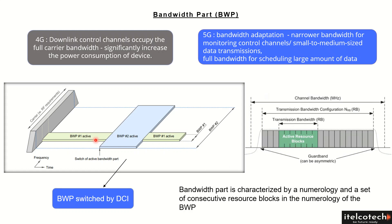The bandwidth part can be switched from one part to another, which becomes active from time to time. That switching will be done by the DCI, which is the Downlink Control Indicator, which we will see in the PDCCH in more detail.